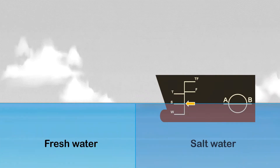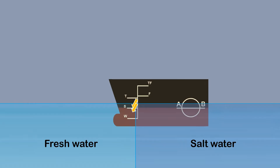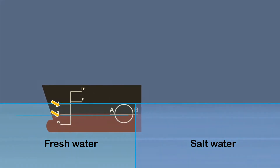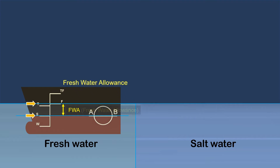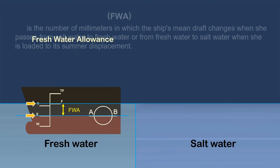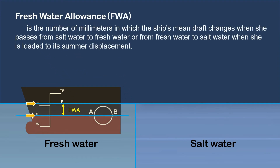The change in the ship's draft from saltwater to freshwater or vice versa is called freshwater allowance. Freshwater allowance is the number of millimeters by which the ship's mean draft changes when she passes from saltwater to freshwater or from freshwater to saltwater when loaded to her summer displacement.